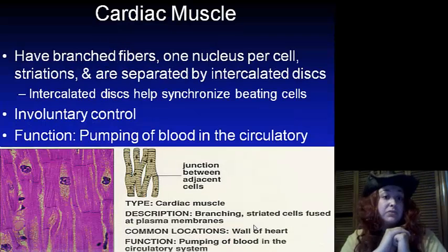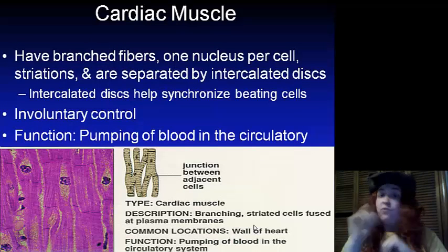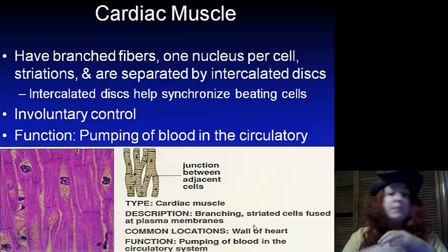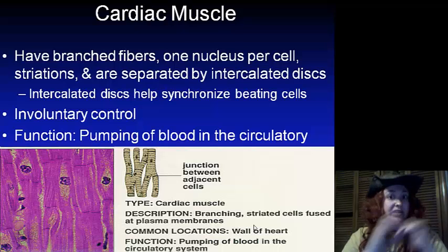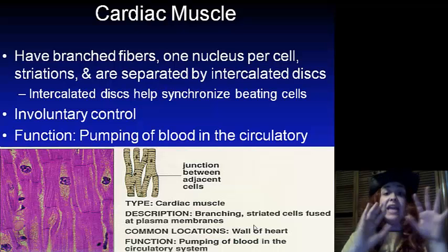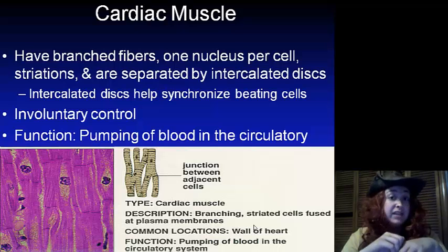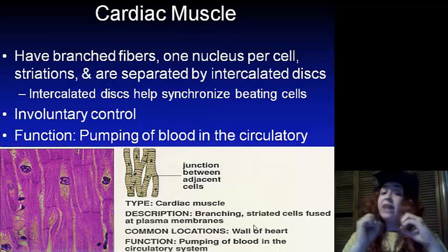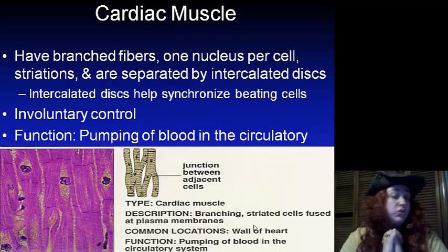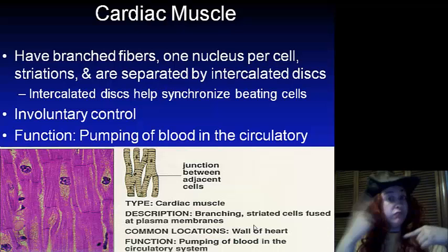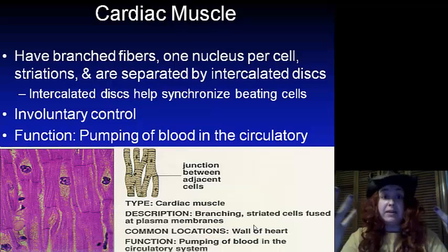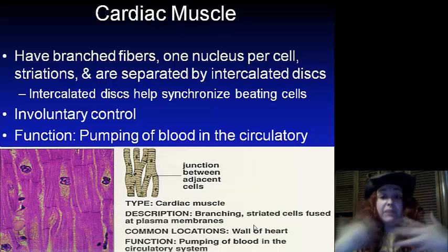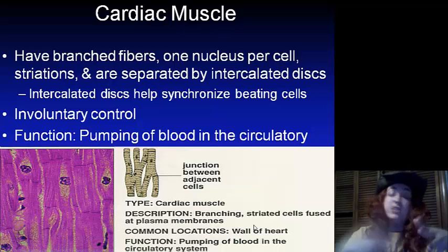For cardiac muscles, we have branched fibers that have one nucleus per cell. We do see striations, and they are separated by something called intercalated discs. These intercalated discs sit between cells and help synchronize the beating of the cells so that all of our cardiac cells can beat together at the same time. Cardiac muscles are involuntary — you don't have to think about it for your heart to keep beating — and their function is for pumping blood through our circulatory system. These muscles are found in the walls of the heart.